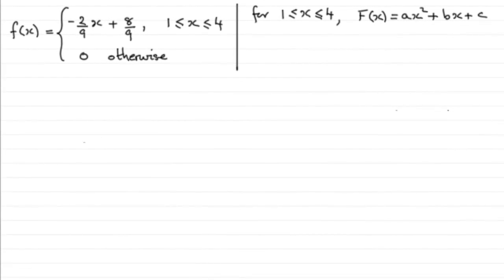Now for this part of the question, we're given that x is a random variable with this probability density function. We've got to show that if x is between 1 and 4, the cumulative distribution function F(x) takes on this form: ax squared plus bx plus c, where a, b, and c are constants.